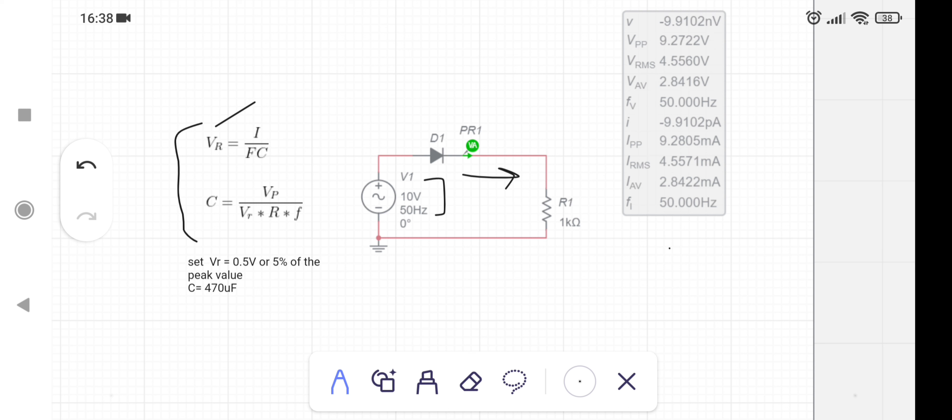In this formula, VP is peak voltage and this peak voltage is 9.2 volts. VR is the ripple voltage, R is the load resistor, and F is the frequency.